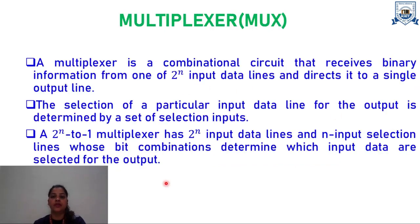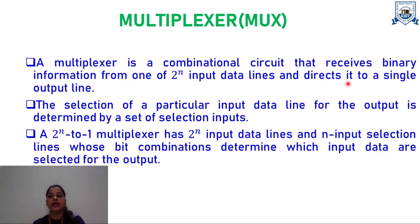In some of my previous video lectures, I had given you an introduction about combinational circuits and sequential circuits with examples. In this video lecture, we are going to discuss about one example of the combinational circuit, that is the multiplexer. Multiplexer is a combinational circuit that receives binary information from one of the 2^n input data lines and directs it to a single output line. Due to this reason, multiplexer is called a many-to-one device.